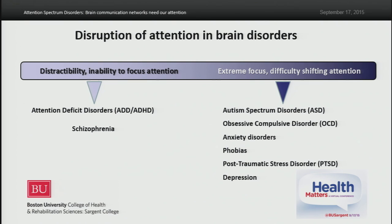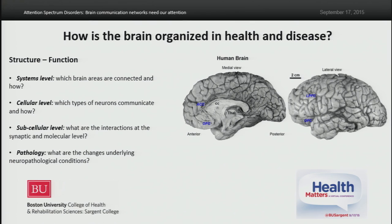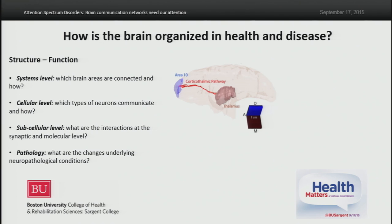Therefore, attention is a key process in health and disease. But how can we study this process? Our approach focuses on the study of the structure and function of the brain at multiple scales. First, at the systems level, we're trying to figure out which brain areas are connected and how — therefore, we study brain pathways.